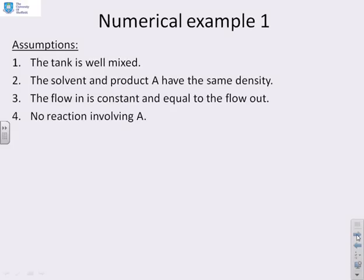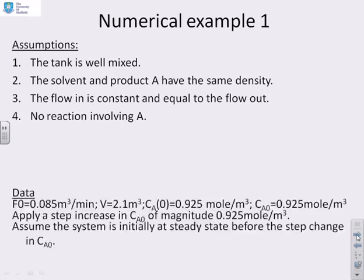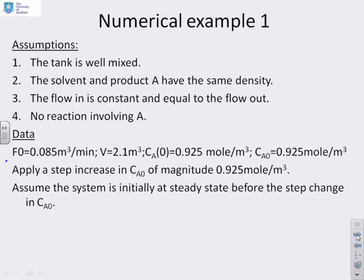A numerical example. Reminder of the assumptions: the tank is well mixed, the solvent and product have the same density, the flow in is constant and equal to the flow out, and there's no reaction involving A. The data: flow is 0.0585 metres cubed per minute, volume of the tank is 2.1 metres cubed, initial concentration in the tank is 0.925 moles per metre cubed. Because the gain of the model is one, in steady state the concentration in the tank equals the concentration in the inflow — both 0.925, as expected.